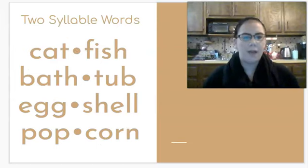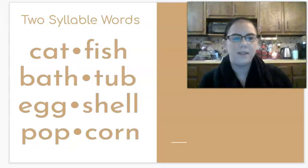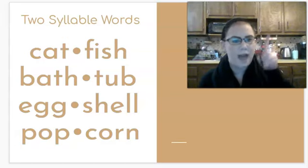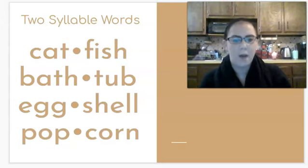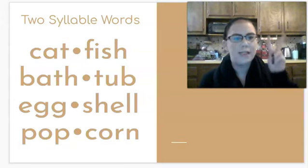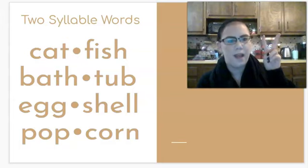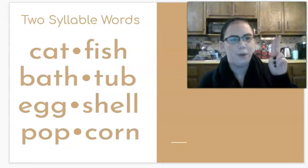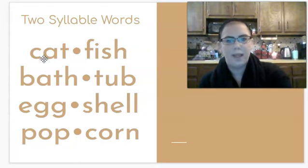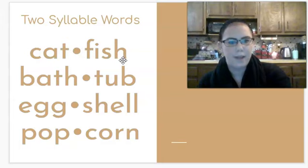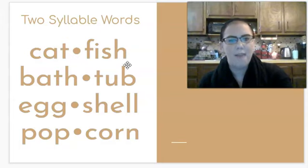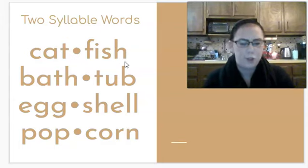Yesterday we started talking about syllables. How many vowels does each syllable have? That's right, each syllable has one vowel. We also talked about compound words and how a compound word is made up of two separate one-syllable words put together to make one new word. Just like our first example here: cat, fish, catfish. Cat is its own word, fish is its own word, and catfish is a brand new word when you put those two together.